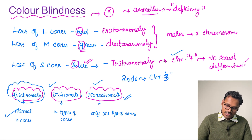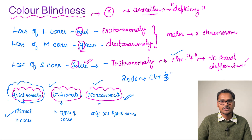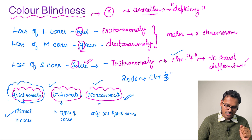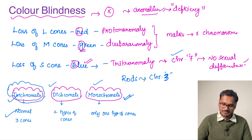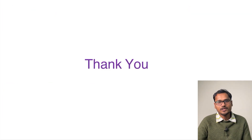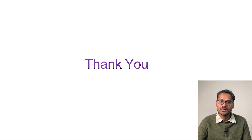We should also know the terms trichromats, dichromats, and monochromats. Trichromats have all three cone types — red, green, and blue — which is the normal condition. If someone lacks one cone type and has only two, they are called dichromats. If someone has only one cone system, they are called monochromats. Rods are located on chromosome 3, while the blue cone gene is on chromosome 7, explaining why tritan anomaly has no sexual preponderance.